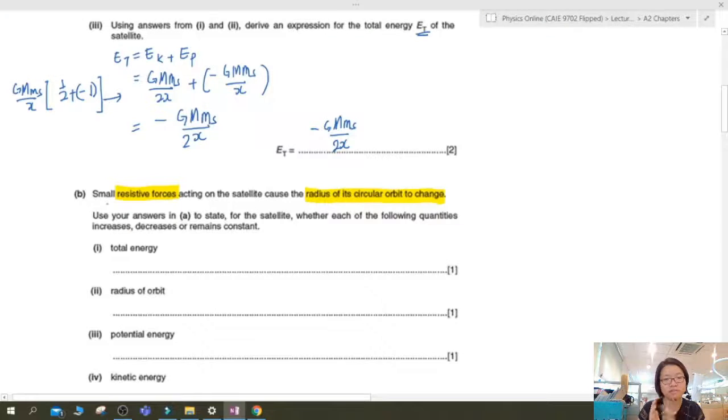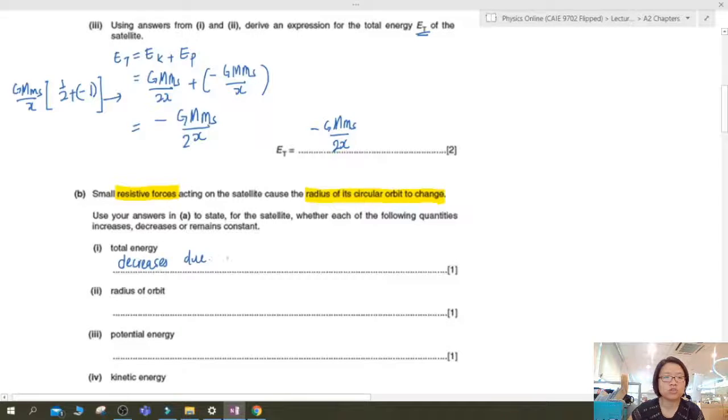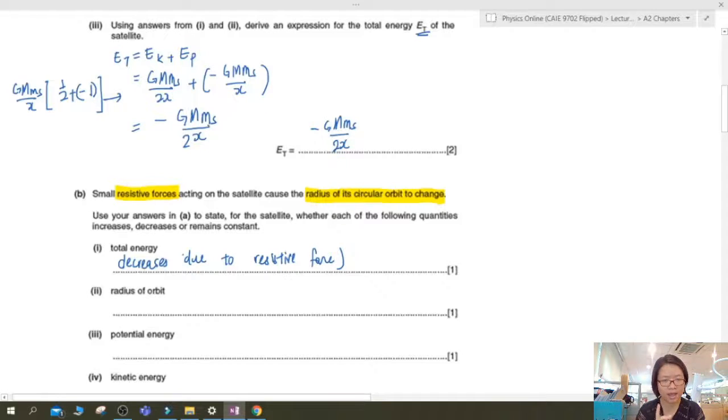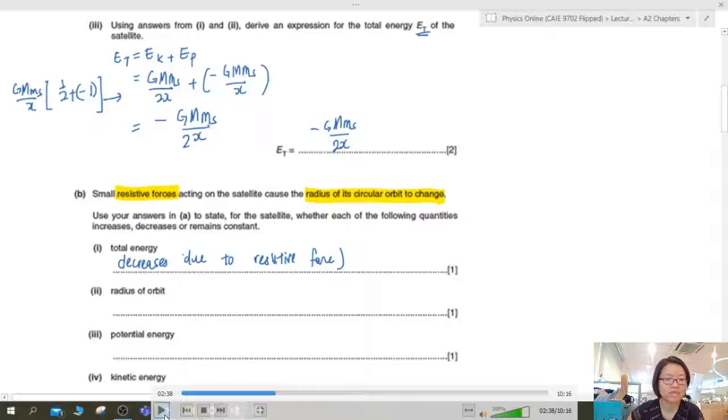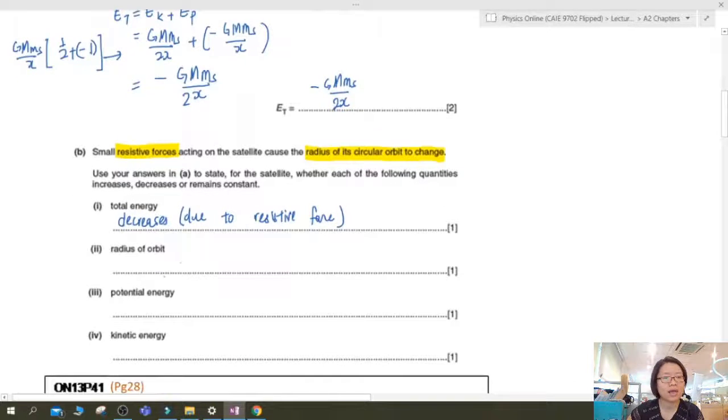Next part, you have a small resistive force acting on the satellite causing the radius of the circular orbit to change. So they are asking you to describe whether the quality increase, decrease, or remain constant. So before I proceed on the video, you notice all of this is one mark. If it's one mark, you don't have to explain. You just write increase, decrease, remain constant, which means you shouldn't leave that part empty. Make sense or not? Because if you leave it empty, it's like you can shoot if you don't know how to answer. But in this case, since there's resistive forces, obviously there will be a decrease in total energy. And if there's a decrease in total energy, the radius of the orbit, how would the radius of the orbit change? So let's think about it for a second.